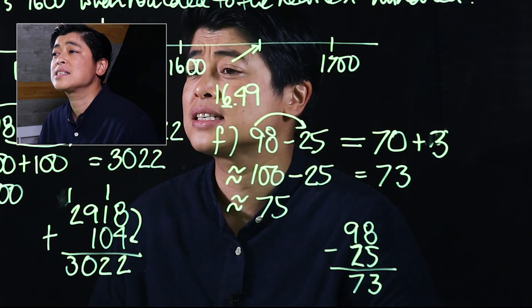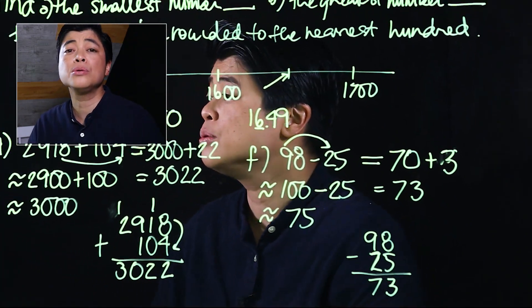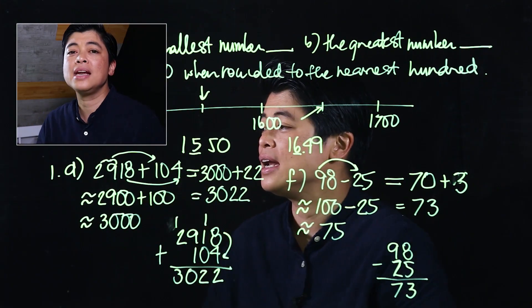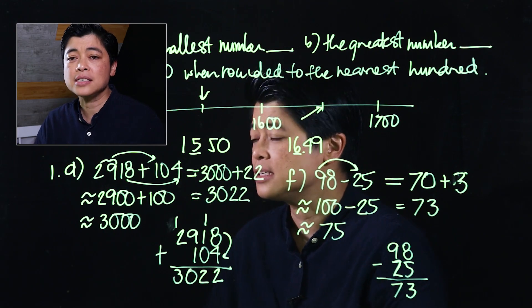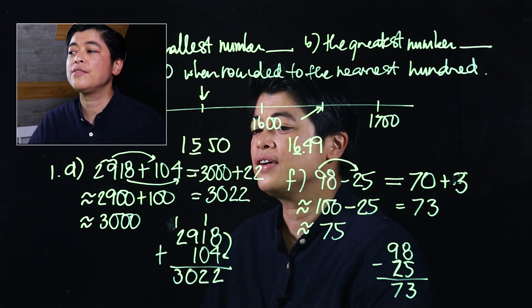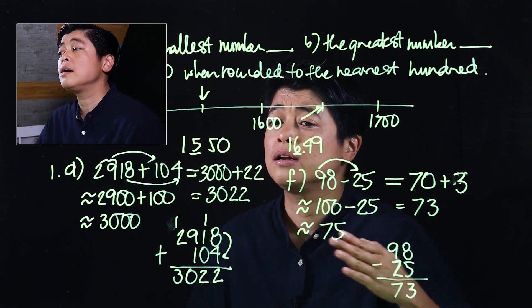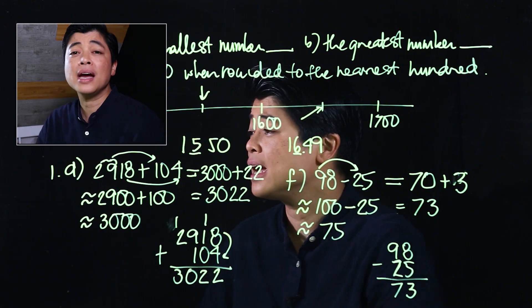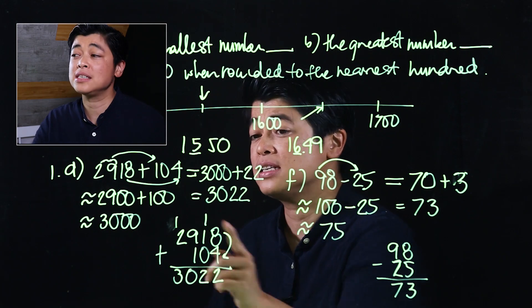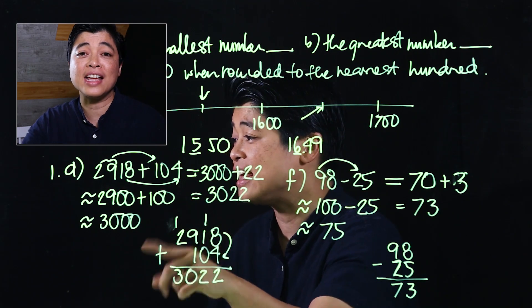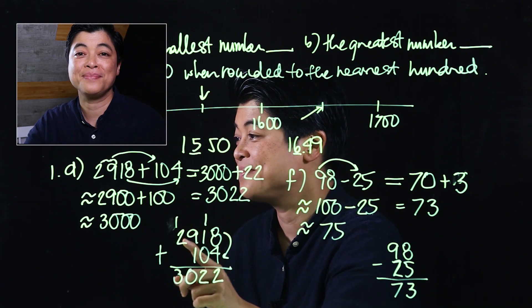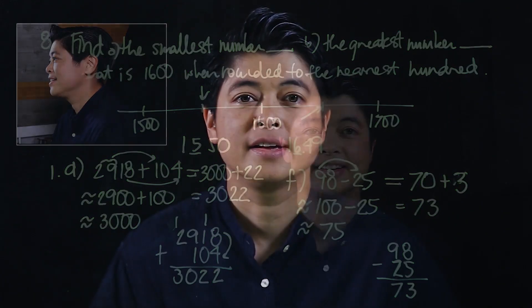The exercise asks us to estimate and then find the actual answer. The logic behind the exercise is to show that they are fairly the same. That concludes Lesson 4 of Chapter 1 — see you in the next chapter.